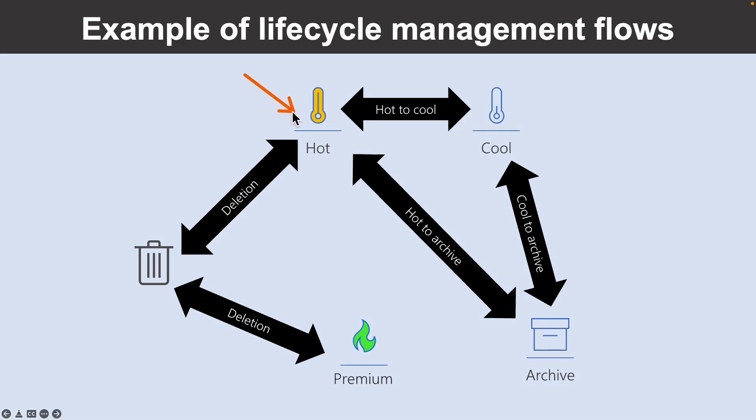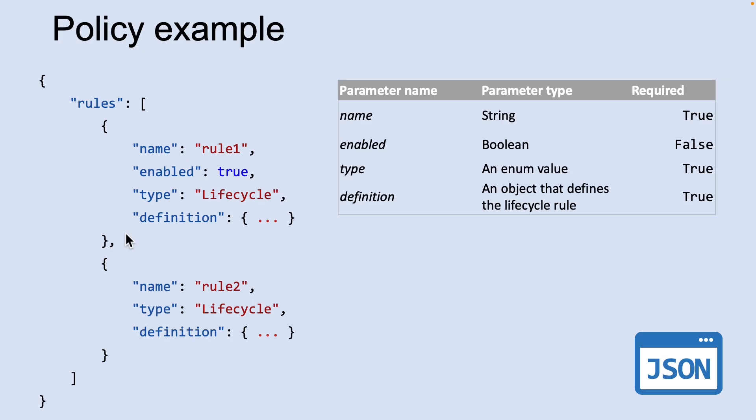In this scenario, hot storage is best during the early stages, and cool storage is most appropriate for occasional access. Archive storage is the best tier option after the data ages more than a month. By adjusting storage tiers with respect to the age of the data, you can design the least expensive storage option for your needs. To achieve this transition, lifecycle management policy rules are available to move aging data to cooler tiers.